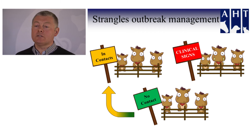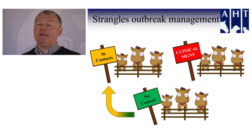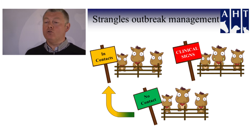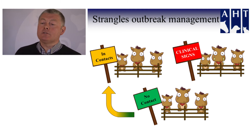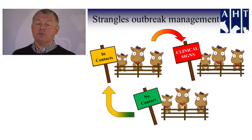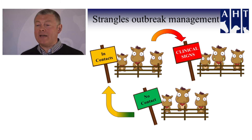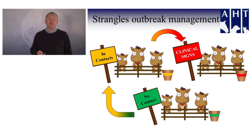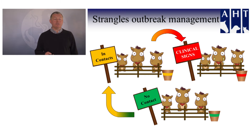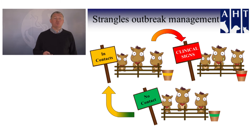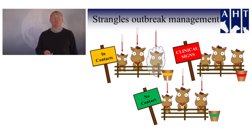It's important when dealing with these outbreaks that we move between these groups in a sensible manner. We want to move from the green low-risk group to the amber group, so that the risk of transmission back to the green group is minimised. Similarly, we move from the amber group to the red group in that order, so we're not risking introduction of disease going the other way.